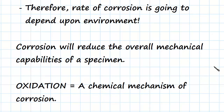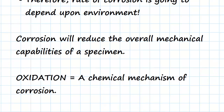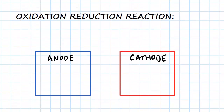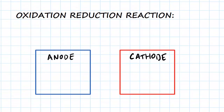So oxidation is a chemical mechanism of corrosion. It's one of the types of mechanisms that leads to corrosion — it's not the only one, but it's the main one that we're going to have a look at. So let's have a look at how oxidation works, and that's best shown through the oxidation-reduction reaction.